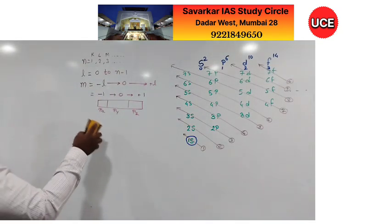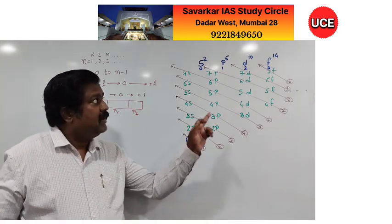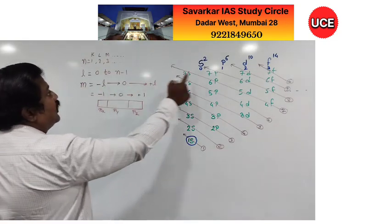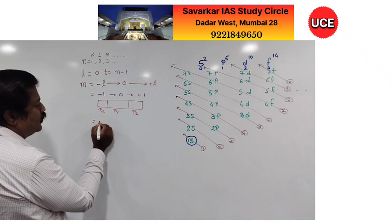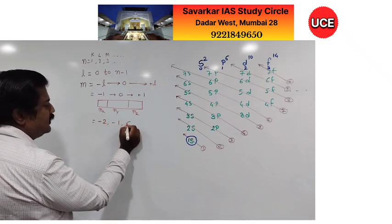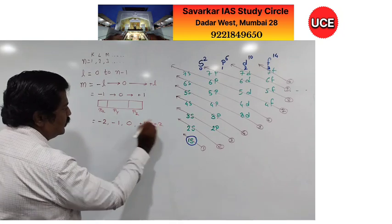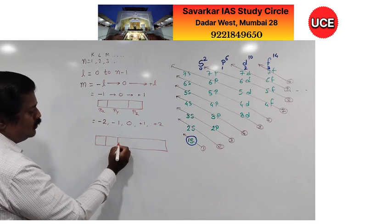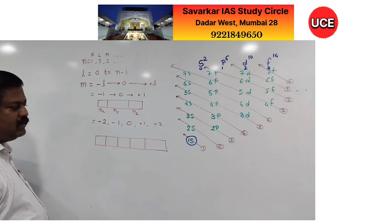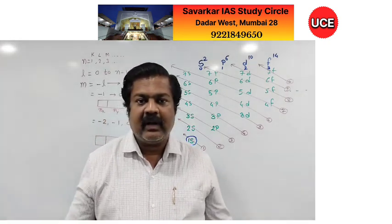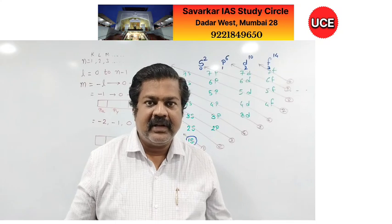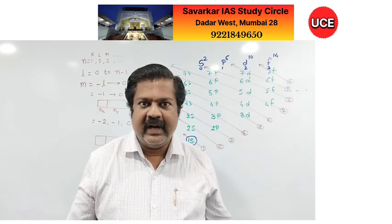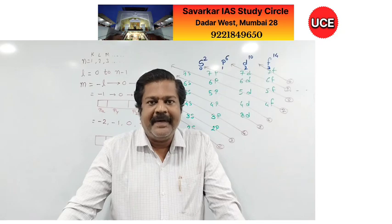The D orbital splits into 5: dx²-y², dz², dxy, dyz, dxz — just as discussed earlier. This is the magnetic quantum number.